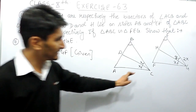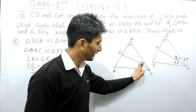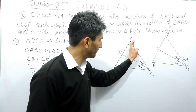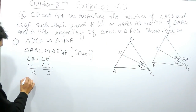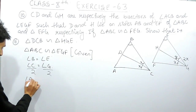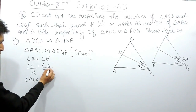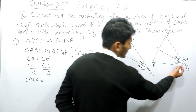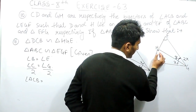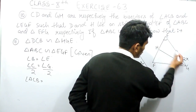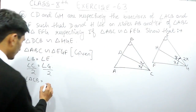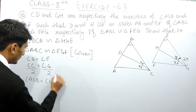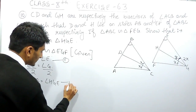Half of angle C is basically angle DCB, so angle DCB equals half of angle C. And half of angle G is angle HGE, so angle DCB must be equal to angle HGE. This gives us the first equation.